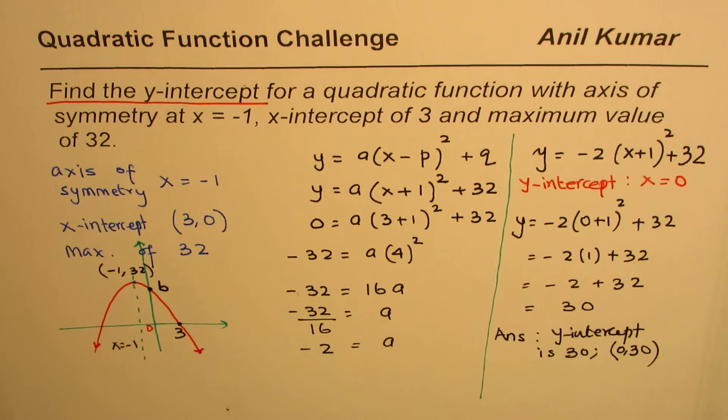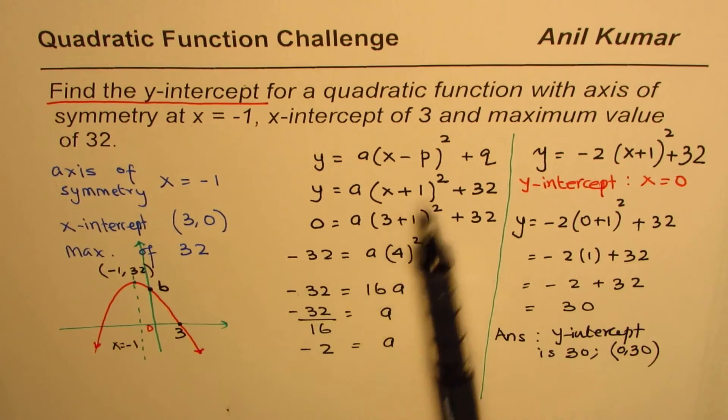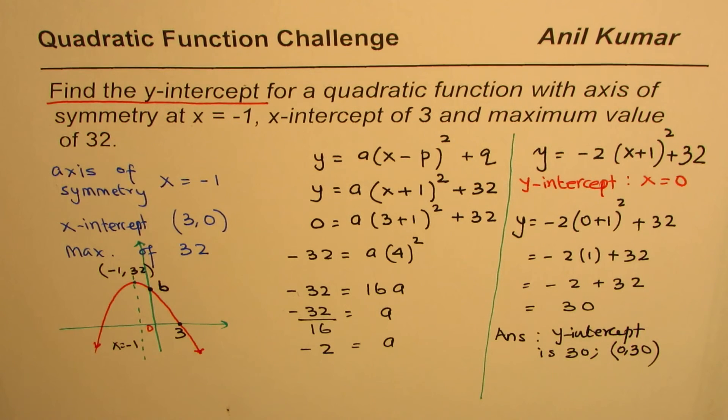I hope you understand the concept. From what is given, you could get an image or figure in your mind as we are shown here, and then find the equation. Since the vertex is known to us, vertex form is a good point to start from. Solve for a, get the equation, and then find the y-intercept. I hope the steps help you to understand. Thank you and all the best.